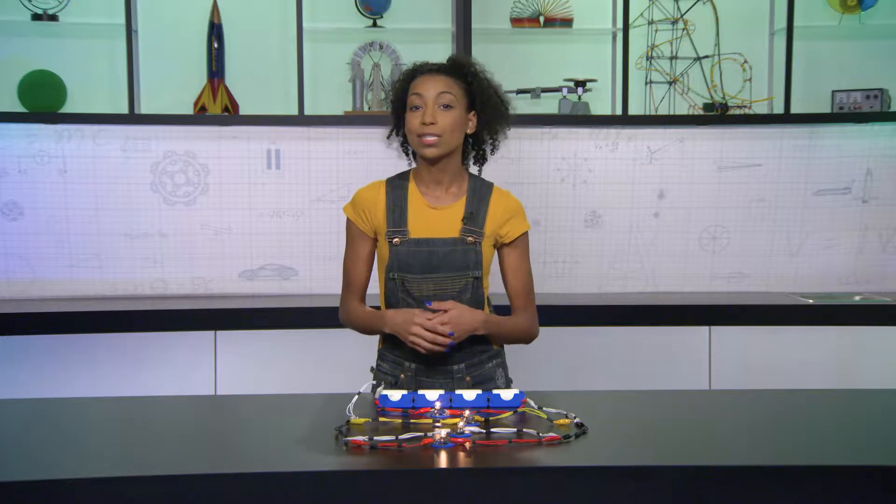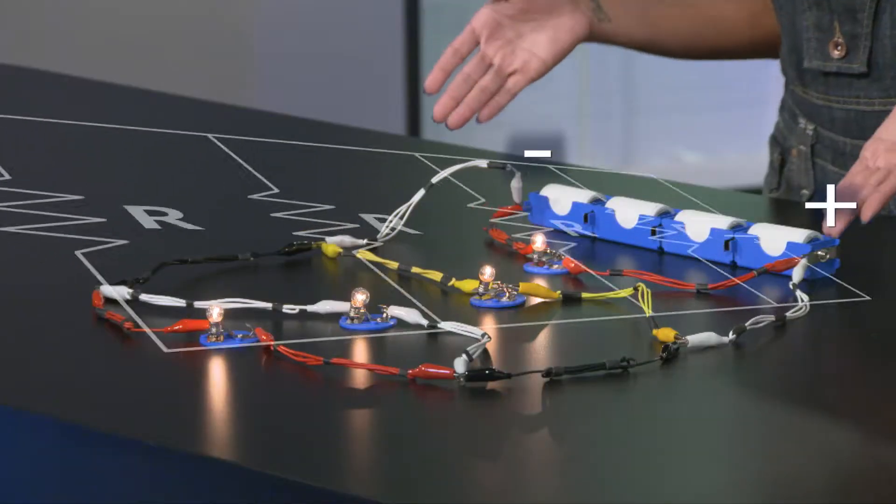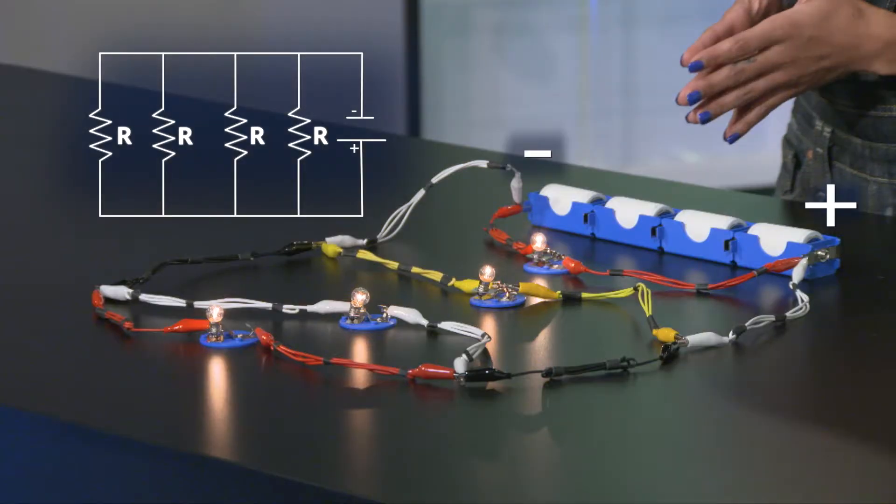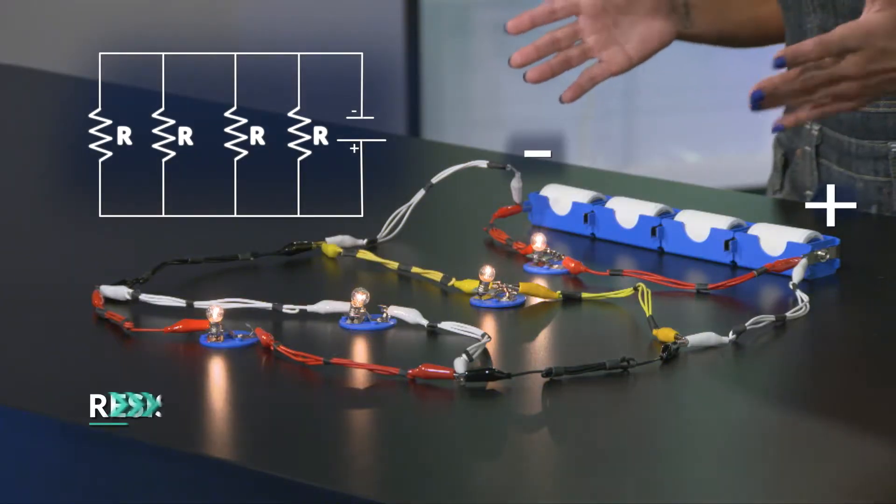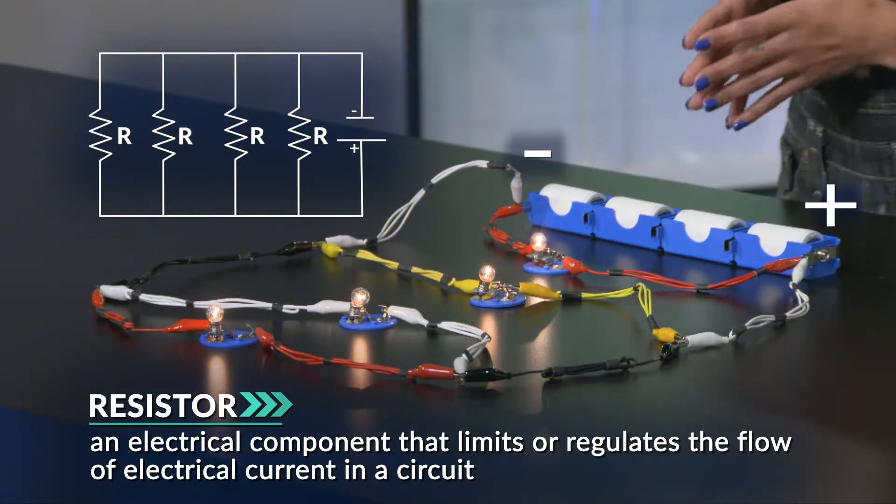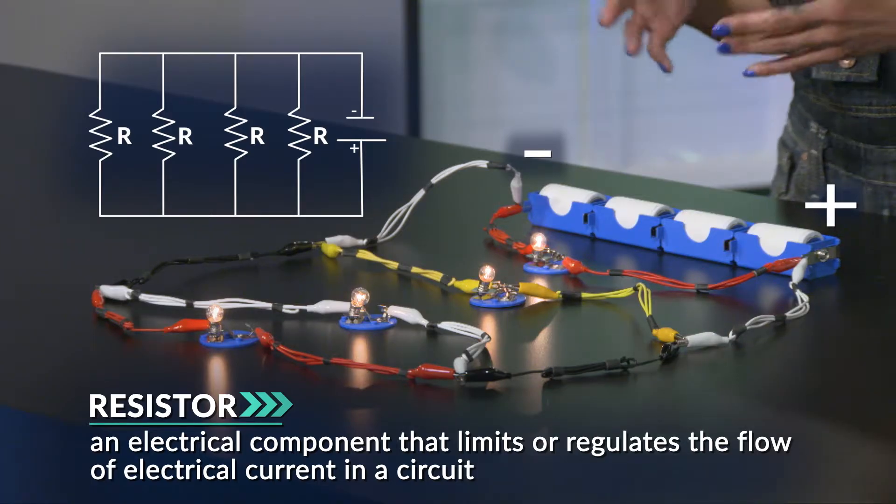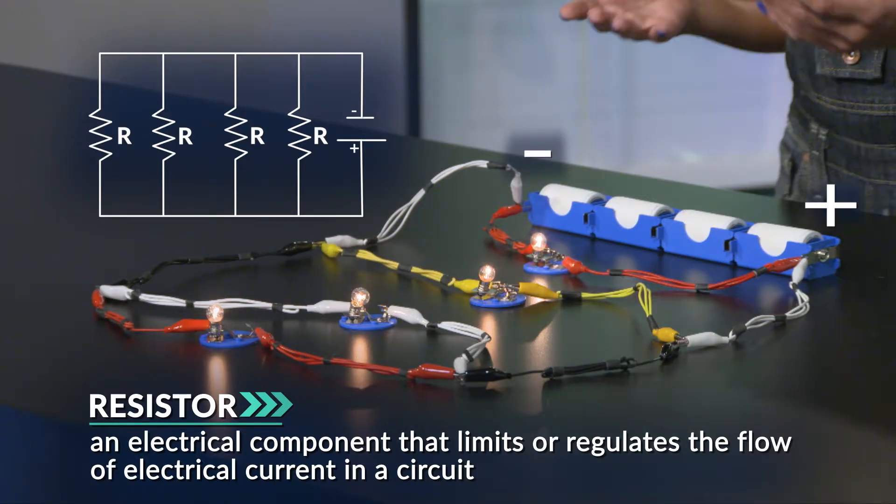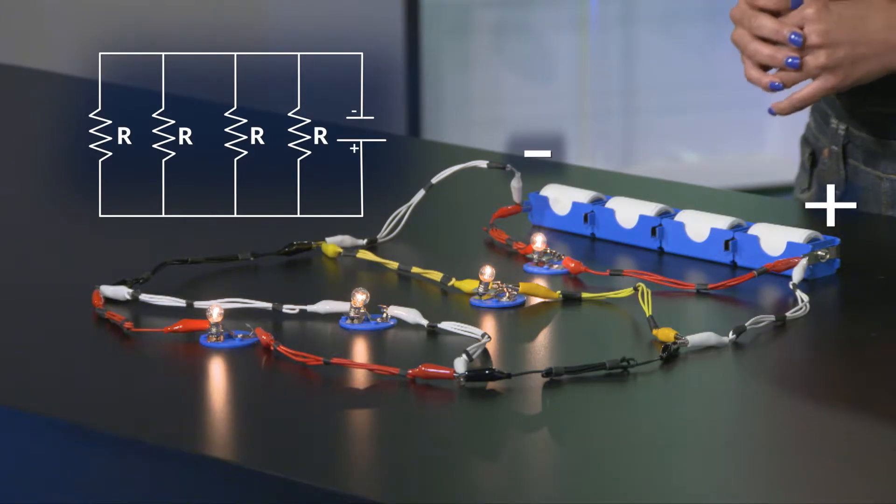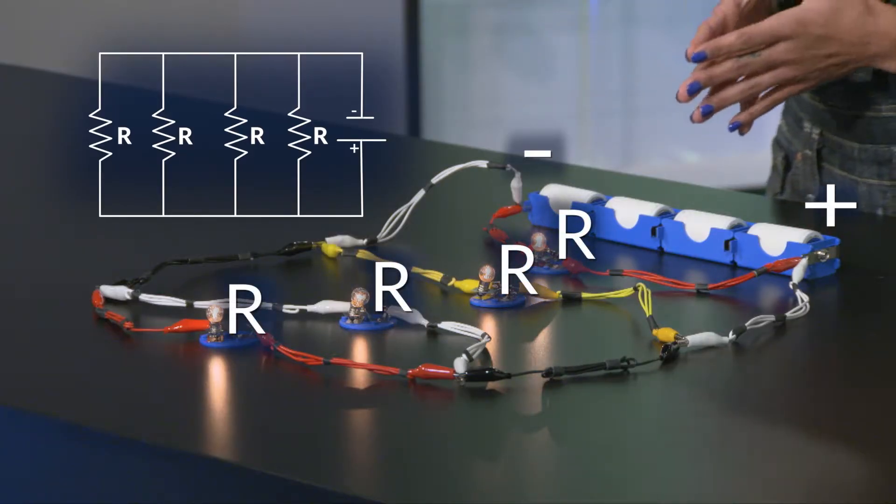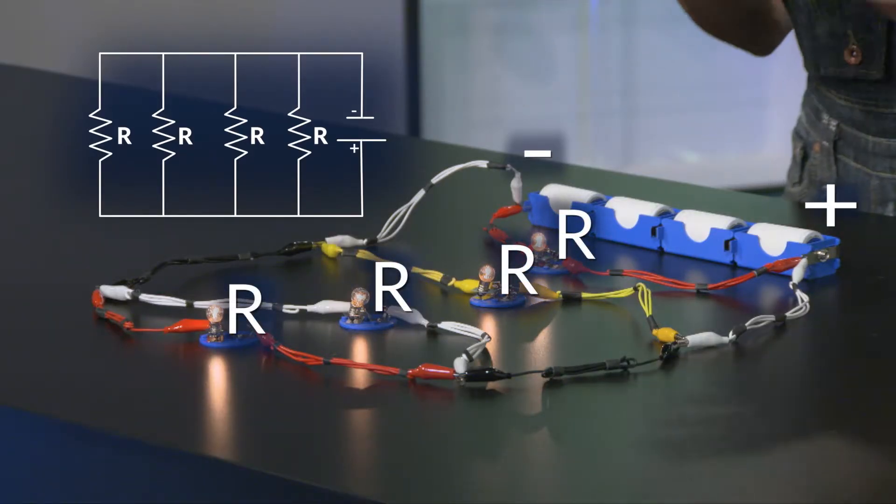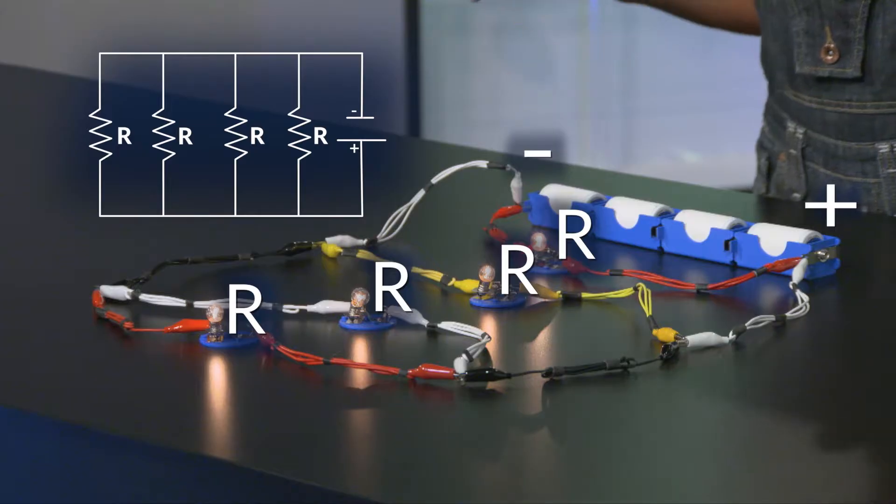Let's look more closely at what makes it a parallel circuit. See those wires running in parallel? The R's with the zigzags are resistors, an electrical component that limits or regulates the flow of electrical current in a circuit. In our case, it's the filaments in the bulbs. When the current moves through them, higher resistance in the filament wires makes them glow.